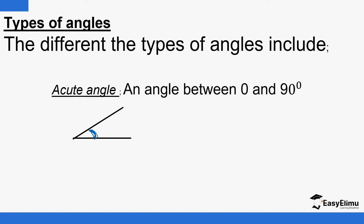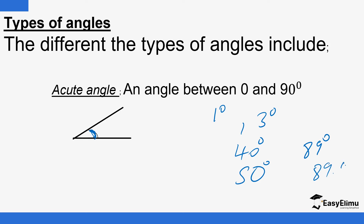Examples of acute angles include 1 degree, 3 degrees, 40 degrees, 50 degrees — so long as it is between zero and 90. Even 89 is still acute, and 89.9 degrees is still acute. But the moment it gets to 90, the name changes. The size of the space between the two lines determines the name of the angle.